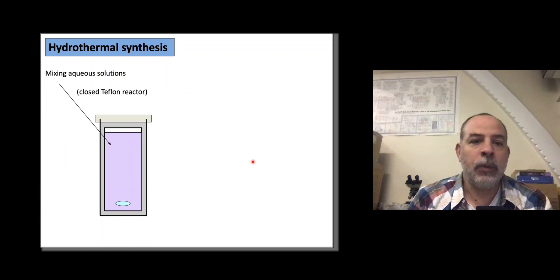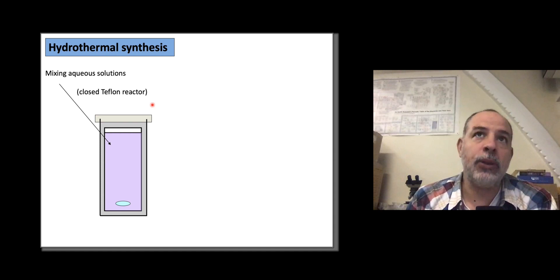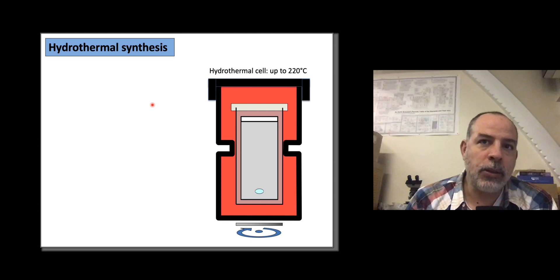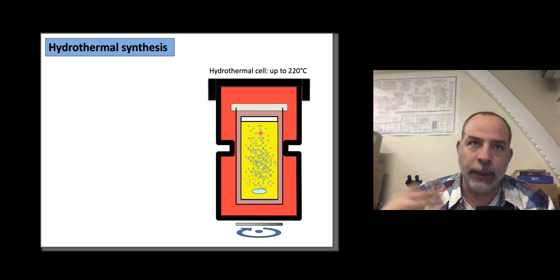Another method, which is very beautiful, is hydrothermal synthesis. We mix aqueous solutions, usually at ambient temperature, in reactors made of Teflon that can withstand temperatures of 200–220 degrees C. We put these reactors inside hydrothermal cells, increase the temperature to 200 or 220 degrees, and crystallization takes place inside this fluid. Then you can take these crystals for analysis for whatever purpose.